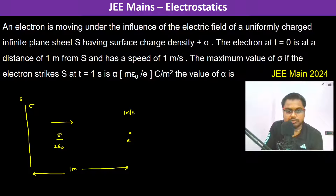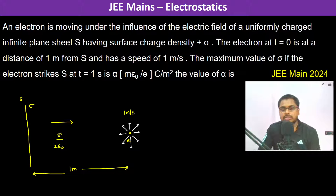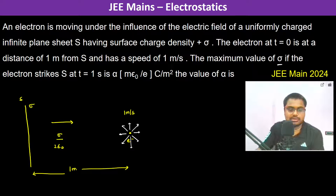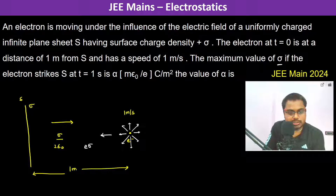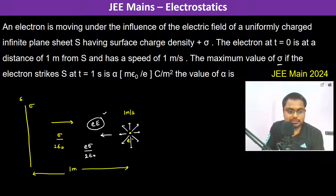The speed can be in any direction. Now, what is the maximum value of σ if the electron strikes the sheet? The electron is going to experience a force in this direction, which is e × σ/(2ε₀) — basically e times the electric field. This is the force experienced, so the acceleration becomes this force divided by the mass of the electron.